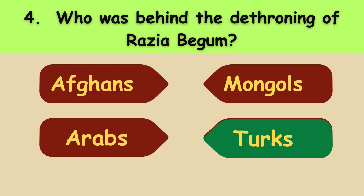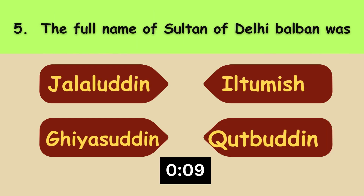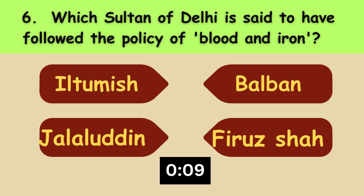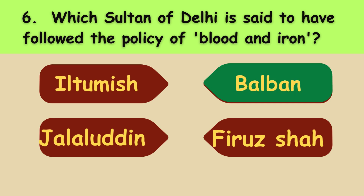The full name of the Sultan of Delhi, Balban, was Ghiyasuddin. Which Sultan of Delhi is said to have followed the policy of blood and iron? The answer is Balban.